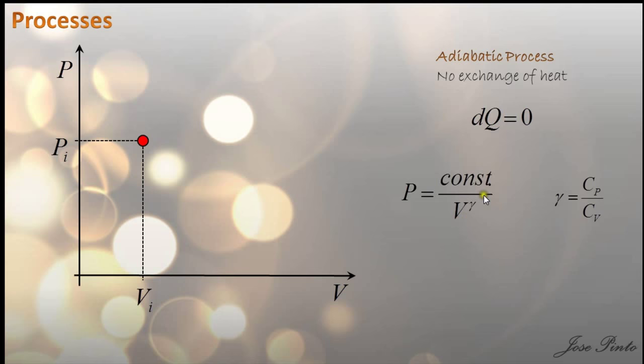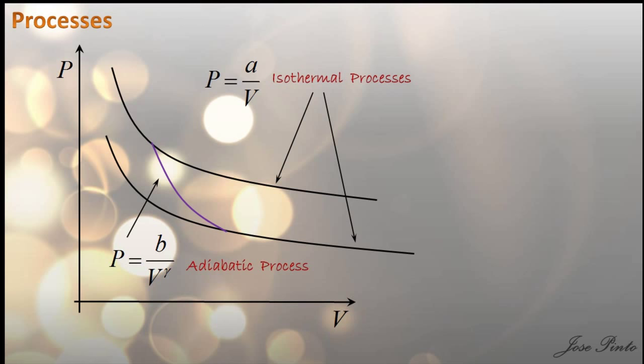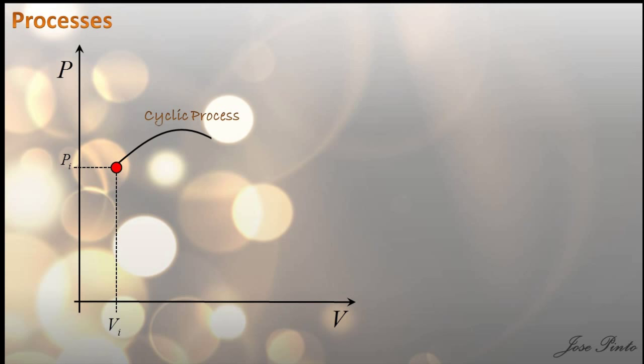Please don't confuse the adiabatic process with the isothermal process. A cyclic process is a closed curve in the PV diagram — it means that the system goes back to its initial state. Remember that energy is an exact differential, so the change in energy only depends on the initial and final points, not on the path. So here the final and the initial points are the same, and therefore the change in energy in any cyclic process is always zero.